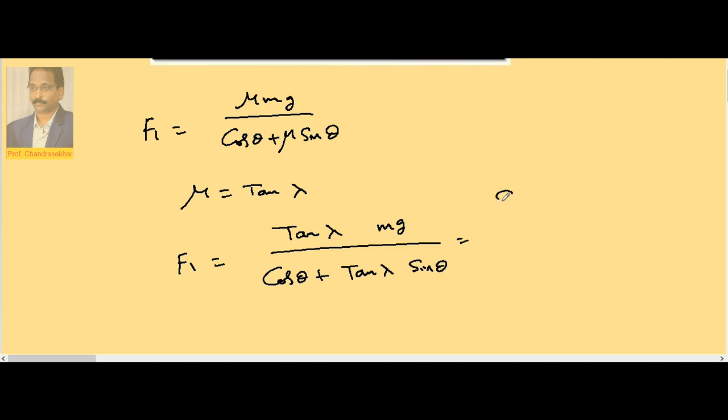Tan can be written as sin by cos divided by cos theta plus sin lambda by cos lambda into sin theta.